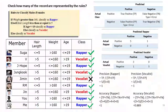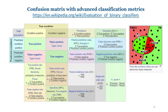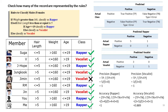We can further check how many of the records can be represented by the rules. This technique is called the confusion matrix, and we can use each of the variables provided to check how many records comply with the rules and assess the accuracy of the model.